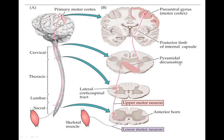There is something called pyramidal decussation, where the tract crosses and then descends as a lateral corticospinal tract. The majority — 80% of the fibers — cross to form the lateral corticospinal tract, and 20% of the fibers do not cross. These tracts are called pyramidal tracts because of this elevation formed in the medulla — the formation of this pyramidal elevation in the medulla — not because of the pyramidal cells in the cortex.